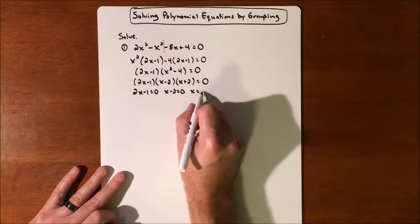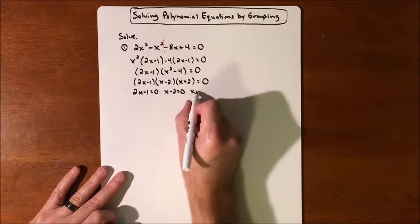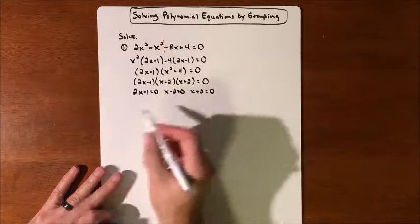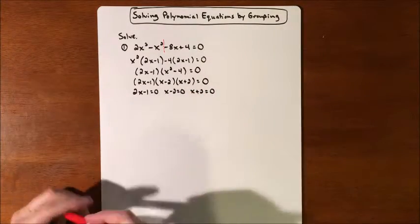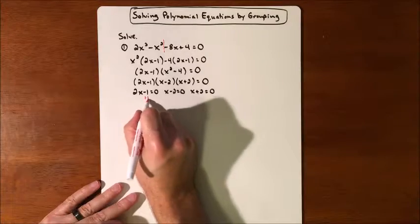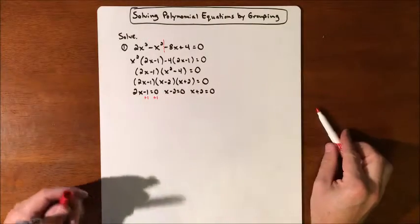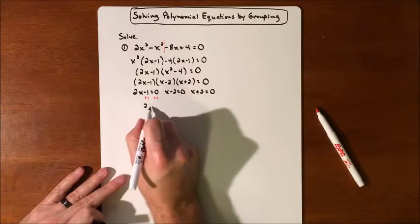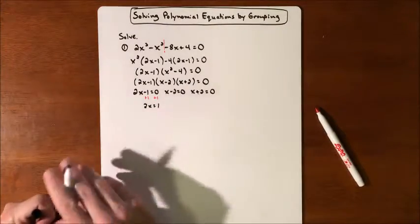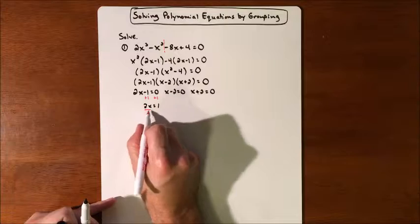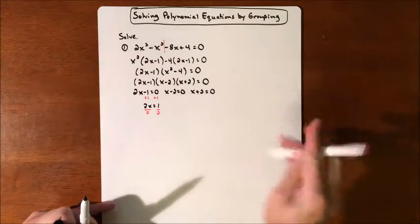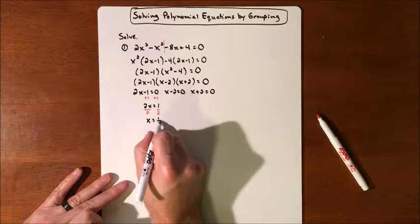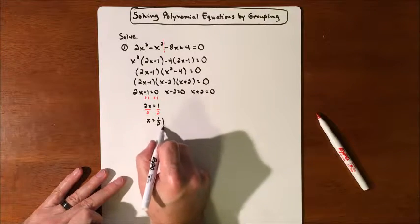And we're going to get three answers out of this. So on this one, it's going to be the most work. We're going to add 1 to both sides. And we will get 2x equals 1. And we'll divide both sides by 2. So we'll get x equals 1 half. So there's one solution.